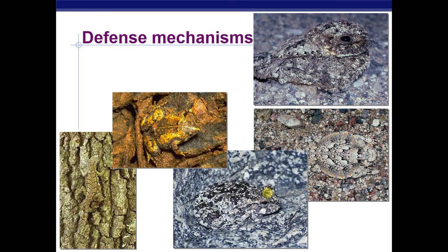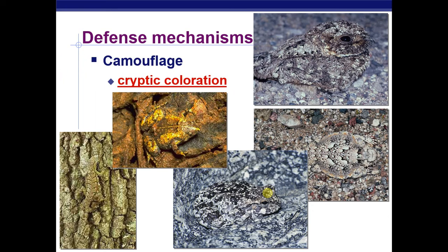Some defense mechanisms that prey are able to adapt include camouflage or cryptic coloration. Look at these different images and see if you can see all of the animals in each picture and how exquisitely they blend their camouflage to the natural environment.